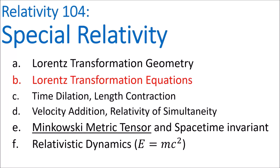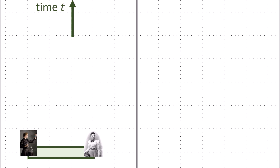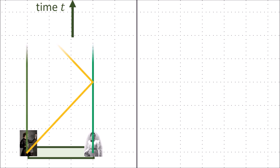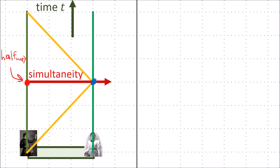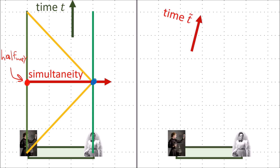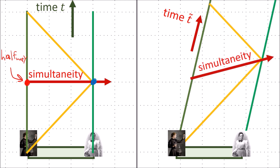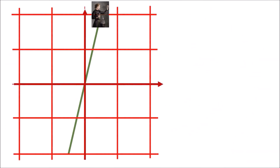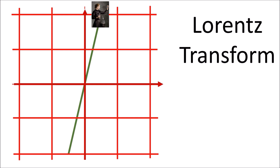In the last video we talked about the geometry of the Lorentz transformation. In this video we'll derive the actual equations. Recall that we used a beam of light to define when two events in spacetime are simultaneous — we sent light to the right, reflected it back, and reasoned that the midpoint event is simultaneous with the reflection event. Lines of simultaneity in the rest frame are horizontal, but in a moving frame they are diagonal. This led us to the Lorentz transformation.